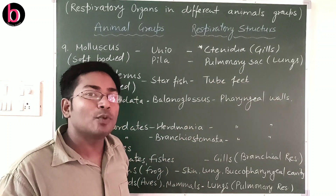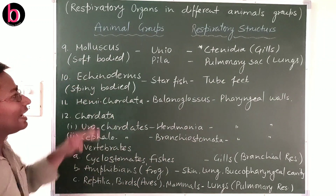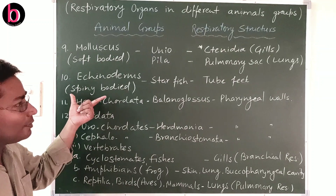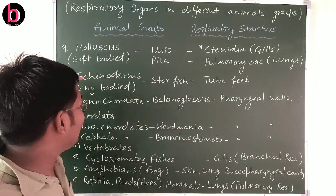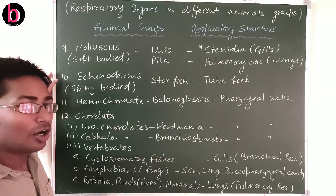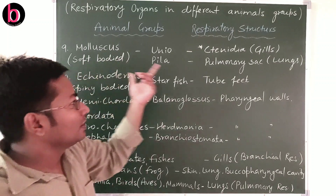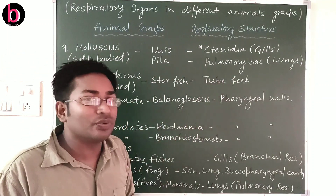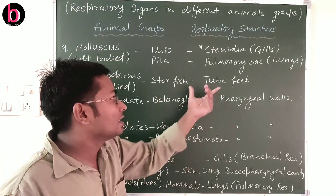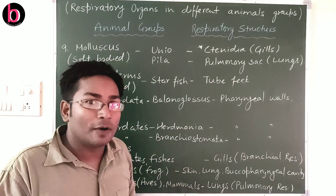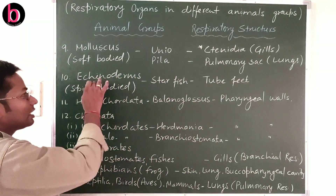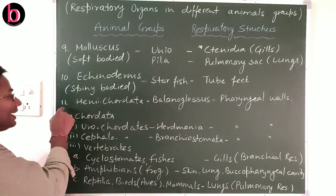Echinoderms, or Echinodermata, are commonly known as spiny-bodied animals. For example, starfish. They have pentamerous radial symmetry and possess tube feet that serve multiple purposes: locomotion, respiration, and gripping objects. Gaseous exchange in echinoderms occurs through these tube feet.